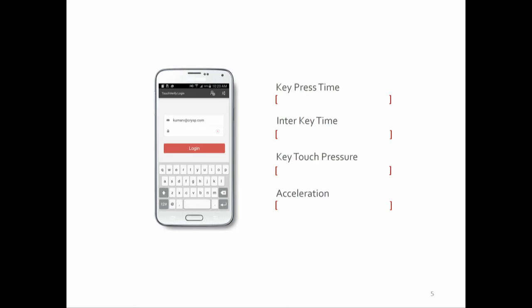Kumar will tell us more about location and device profiling, but I want to say a few words about behavior profiling. As a user enters their credential, we collect things like key press times, the time between keys, touch pressure, acceleration, and a few other attributes. This can work with a PIN as well — any numeric code, even a short PIN. You can think of it as a way of extracting more security out of whatever your credential is.